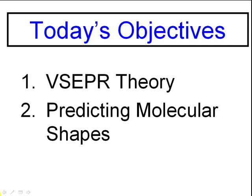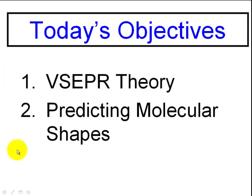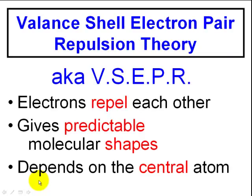Hey guys, it's Mr. Post, and on today's video we'll be looking at the VSEPR theory, which stands for the valence shell electron pair repulsion theory. That's going to give rise to our second objective: predicting molecular shapes based upon how valence shell electrons repel each other. Let's jump right into it.